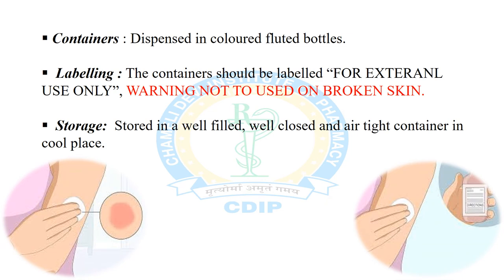After formulation, the container should be a colored fluted bottle to distinguish it from preparations meant for internal use. Labeling must state 'for external use only' and 'shake well before use.' The label should also carry the warning 'not to be applied to open wounds or broken skin.' Liniment should be stored in a tightly closed airtight container in a cool place.